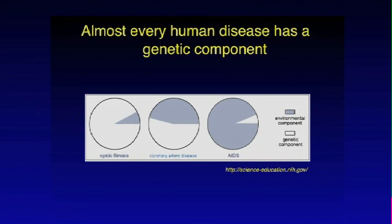In HIV, there are some people who naturally carry a mutation that makes them resistant to HIV. There are also probably other genes that mediate whether people are slow or fast progressors after infection to getting AIDS. The diseases that affect most people are probably in the middle — a combination of environmental and genetic factors. Apart from maybe trauma, almost all medical conditions have some kind of genetic component.